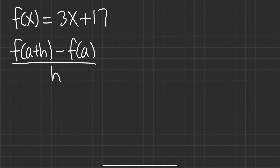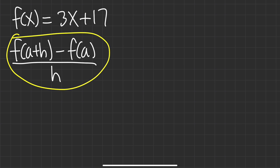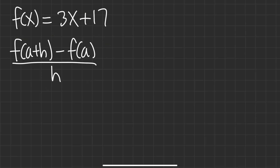Let's see how we are going to find the difference quotient of a function. The difference quotient is given by this formula. Sometimes you may see people write f of x plus h minus f of x all over h — that's fine too, but in this video I will be using a.